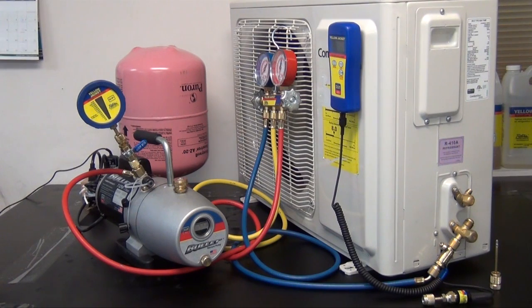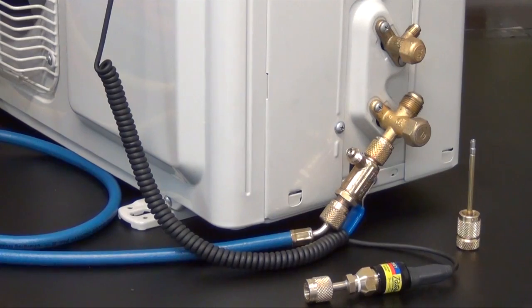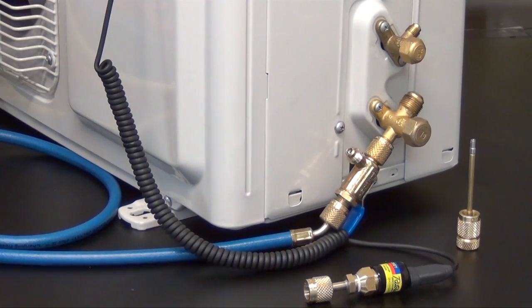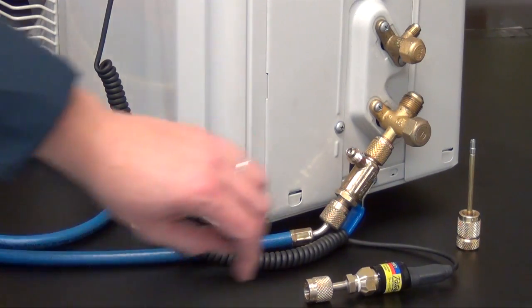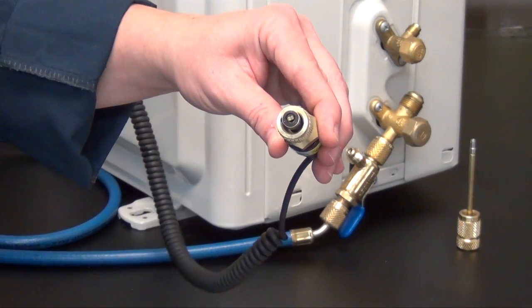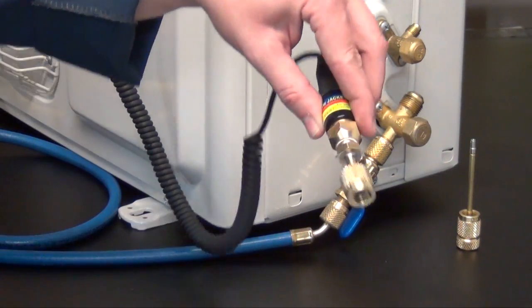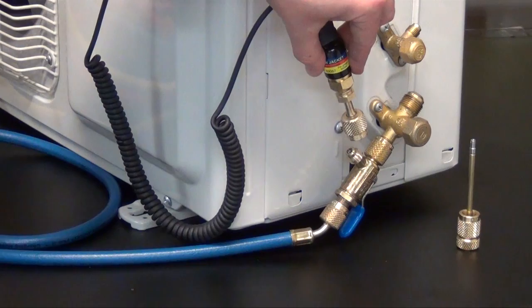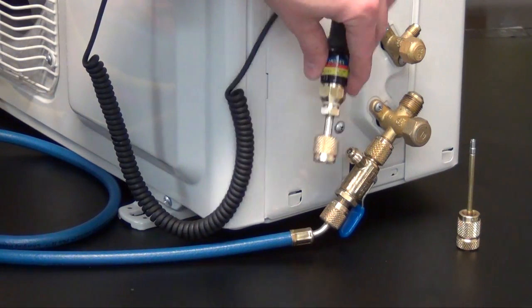Oil is also present in all AC and R systems and can move through the piping or hoses during evacuation or pressurization. To minimize the chance of this oil getting into the sensor, inspect fittings for signs of oil before connecting the vacuum gauge. Also, try keeping the sensor vertical when possible.